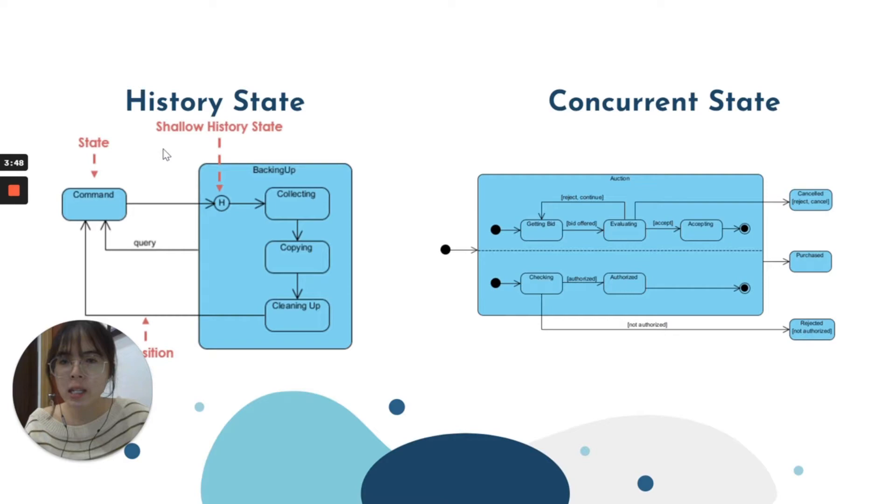Next, a history state can be found inside a composite state. The main function of history state is to allow us to re-enter back to the last sub-state that we have done previously before we exit. This is to reduce some repetitive steps in order to start the whole thing from the initial state to the final state again and again. The last notation is concurrent state. Concurrent state allows us to fork up into two different, like in this example, it fork up into two different concurrent states. Each of these states will be running parallelly, which is running together until the final state.